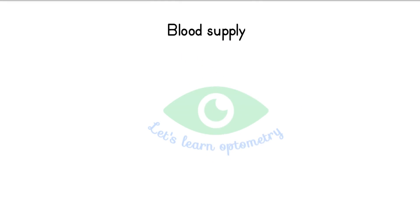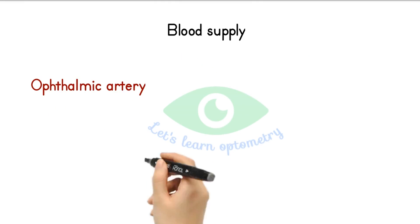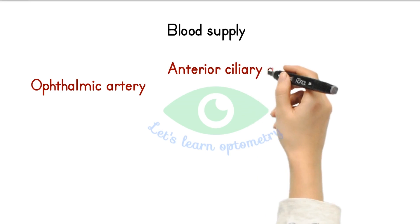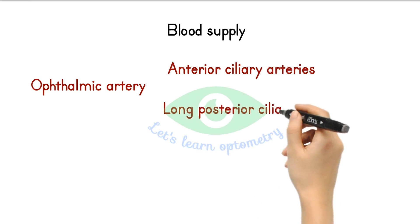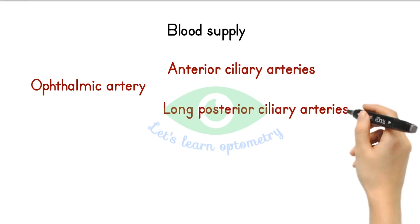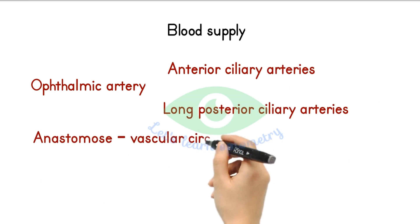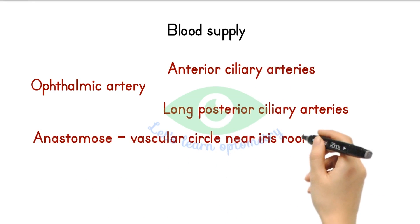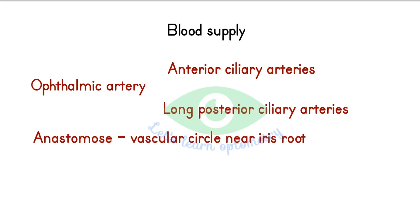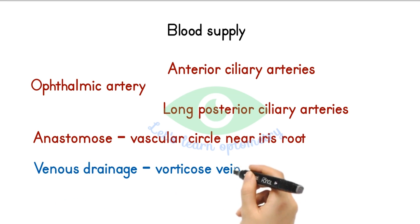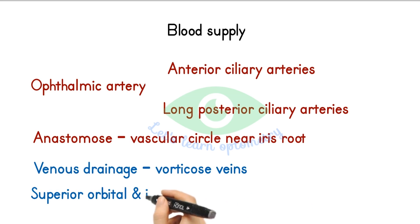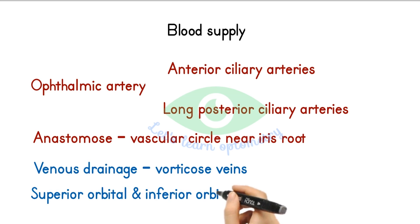Blood supply. The blood supply is provided by two sets of branches of the ophthalmic artery: the anterior ciliary arteries and the long posterior ciliary arteries. These tiny arteries anastomose with each other and form a vascular circle near the iris root, which they also supply. The blood is drained by the vortex veins, which further drain into the superior and inferior orbital veins.